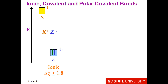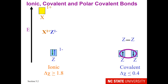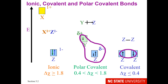Ionic bonds have a delta chi of greater than or equal to 1.8 — there is a large electronegativity difference between the elements. Purely covalent bonds have delta chi less than or equal to 0.4, with very little electronegativity difference. Polar covalent bonds have delta chi between 0.4 and 1.8, a medium electronegativity difference, and the bond produced has a vector and is polar.